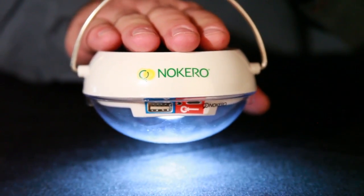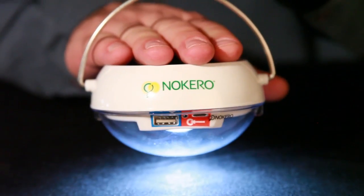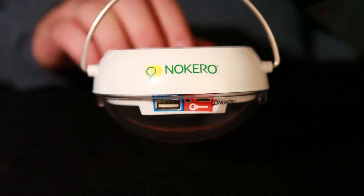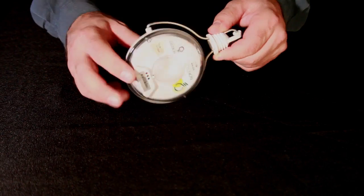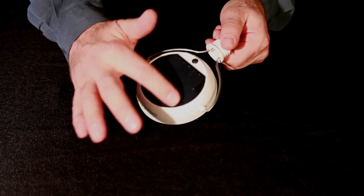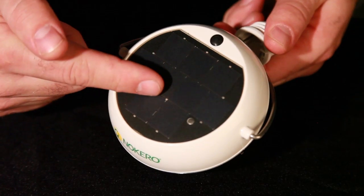The Nocaro N222 has the latest technology to enable a bright light in an affordable and portable package. The N222 has a powerful solar panel that charges a lithium iron phosphate battery inside the housing.